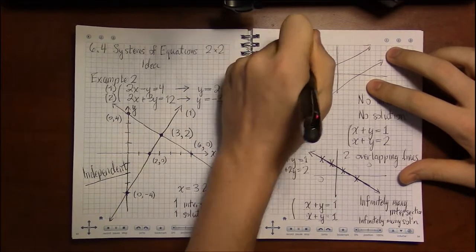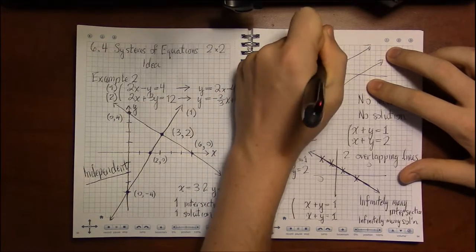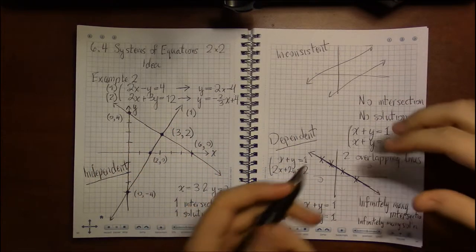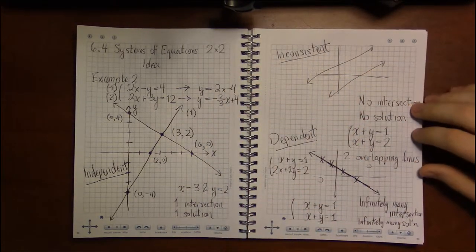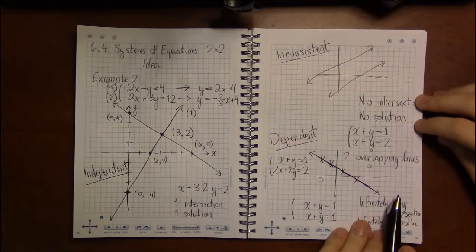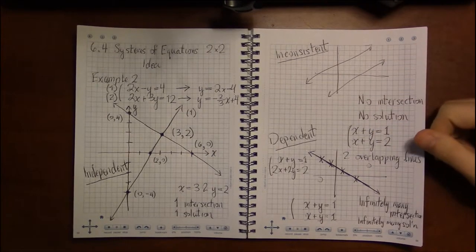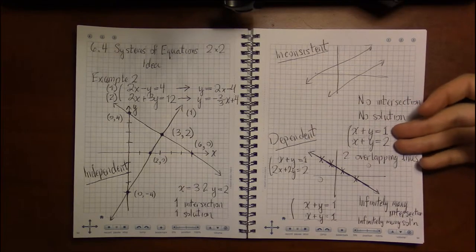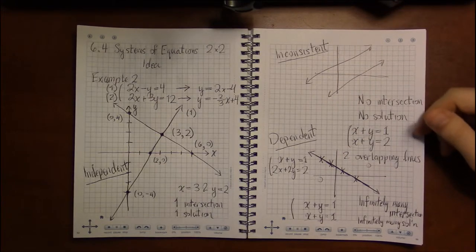And in this scenario where there is no intersection, we call this inconsistent. Inconsistent is kind of an analogy for contradictory or paradoxical, something that cannot happen. Which makes sense in this case, we are asking where do two parallel lines intersect. Well they never intersect, so this is a nonsensical question. You're asking me to solve a problem that has no solution, so the problem is, as we call it, inconsistent.